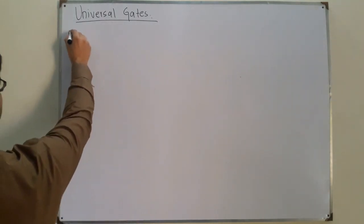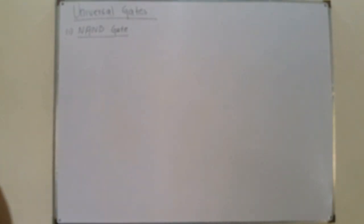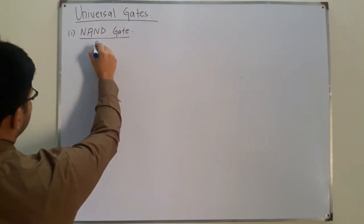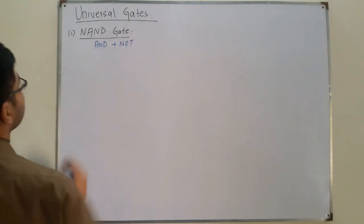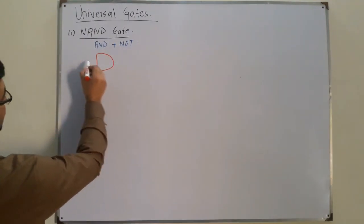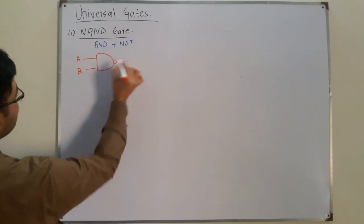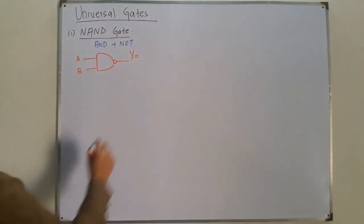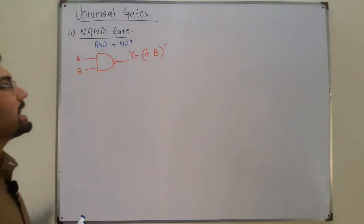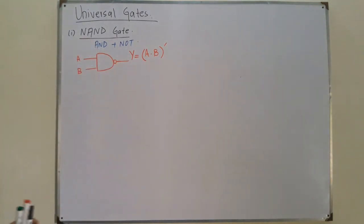The first of these universal gates is the NAND gate. The NAND gate is basically a combination of an AND gate plus a NOT gate. Let me draw the symbol for the NAND gate. The symbol is similar to the AND gate — we have two inputs A and B, and the output has a bubble over here. This bubble represents the complement. So the NAND gate takes the AND of the inputs and then gives you the complemented output.